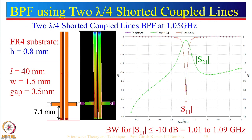Here is a band pass filter using two lambda-by-4 shorted coupled lines. The length is lambda-by-4 with short circuits at both ends. At the short circuit, input impedance equals zero because voltage is zero there. At the open end, impedance is very high because current is zero. Somewhere in between we can find a point where the impedance is approximately 50 ohms, so we need a little bit of design and optimization to find where to feed this particular resonator.